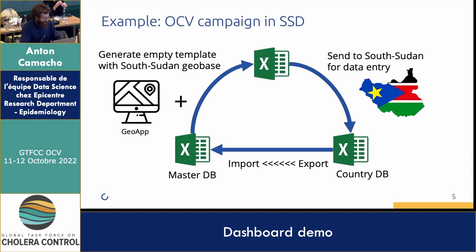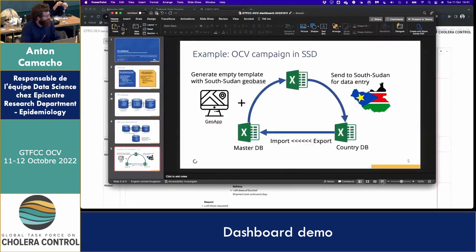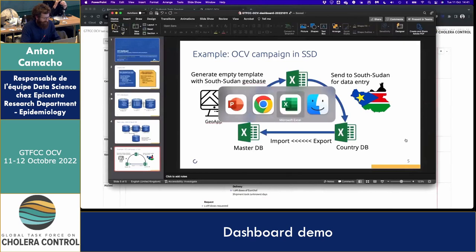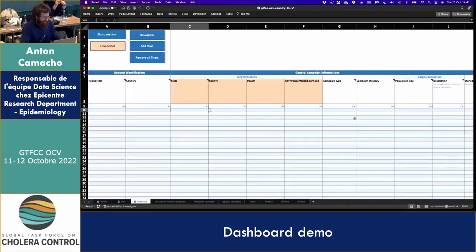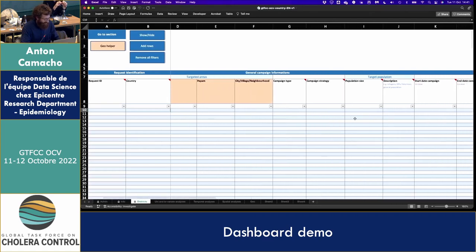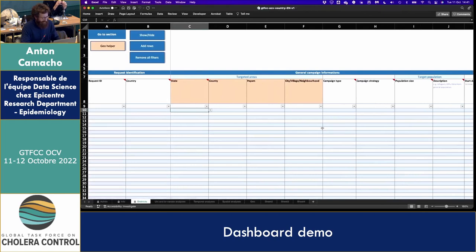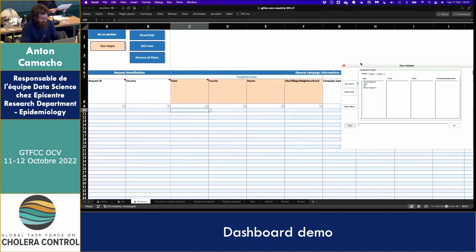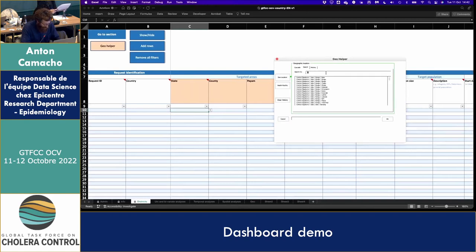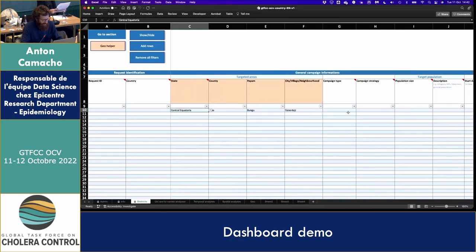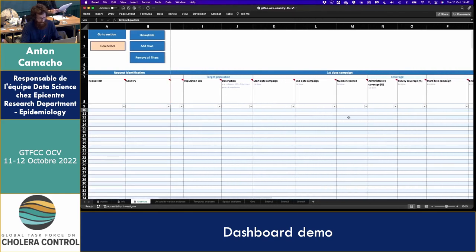That's a part where we'll benefit from feedback from you. It's a very simple Excel spreadsheet with different indicators — one line per entry. You need to enter the geographical location of the places you are vaccinating. Here in South Sudan, for instance, we developed a small button where you can search for the place you are vaccinating, enter it, and then enter the different statistics like administrative coverage and number of people vaccinated for each round.